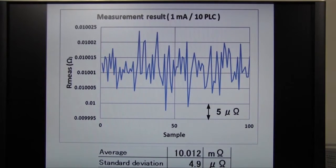Here's the measurement result. You can see that the measurement noise is about 5 microohms and less than 0.1% of measured resistance value. Even if the force current is small such as 1 milliamp, we can achieve a stable measurement.